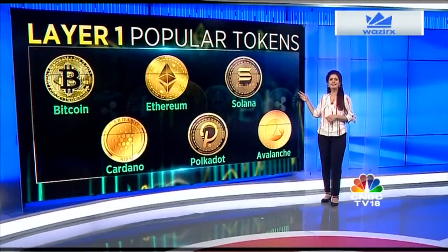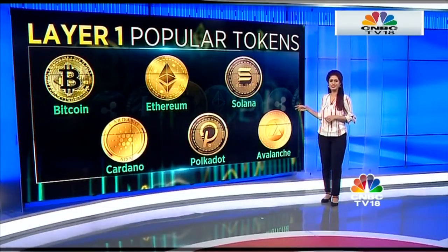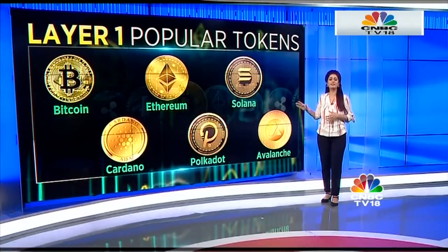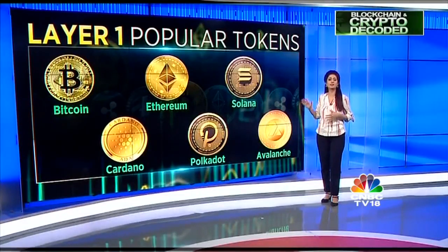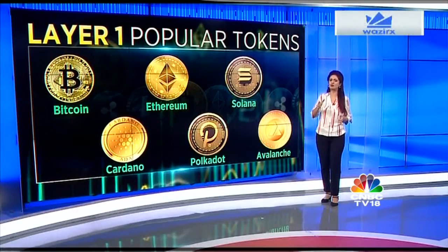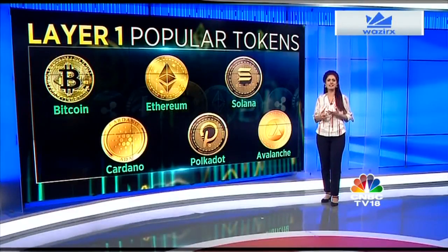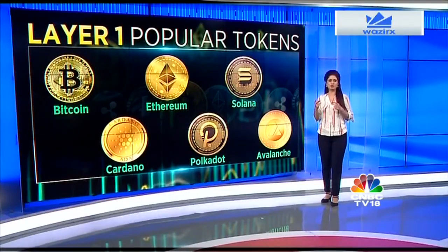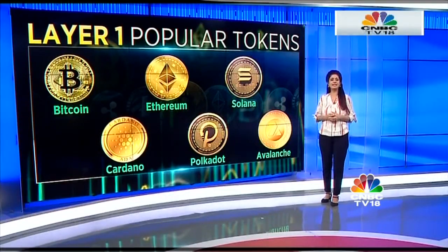Popular layer one tokens are Bitcoin, Ethereum, Solana, Cardano, Polkadot, and Avalanche. Unfortunately, none of the existing protocols have yet scaled to the level that suits global usage without having to compromise other blockchain attributes like decentralization and security. Thus comes in the layer two solutions.